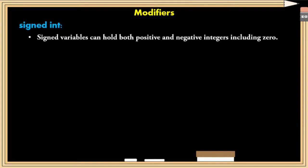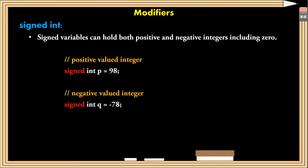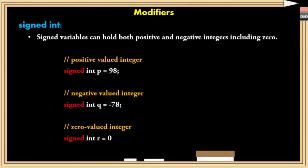Next, signed int. Signed variable can hold both positive and negative integers including 0. For example, you can see below, p can store positive numbers, q can store negative numbers and r can store 0 value.